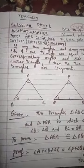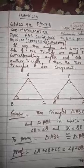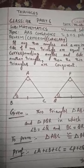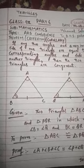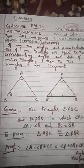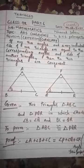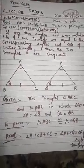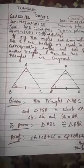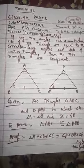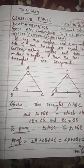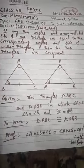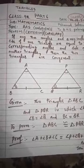After this we will take up another theorem called RHS — right angle, hypotenuse, and one of the sides — which is an important one. We will cover that in the next lecture, lecture number seven. If you have any doubts, please leave them in the comment section and I will try to clear them. Thank you very much.